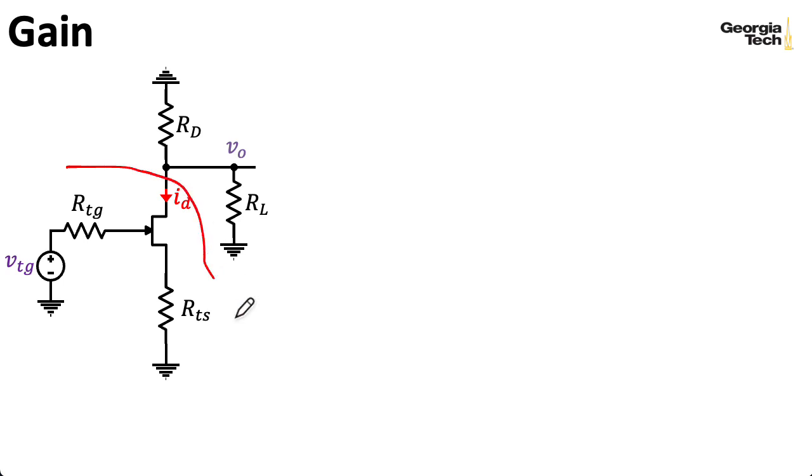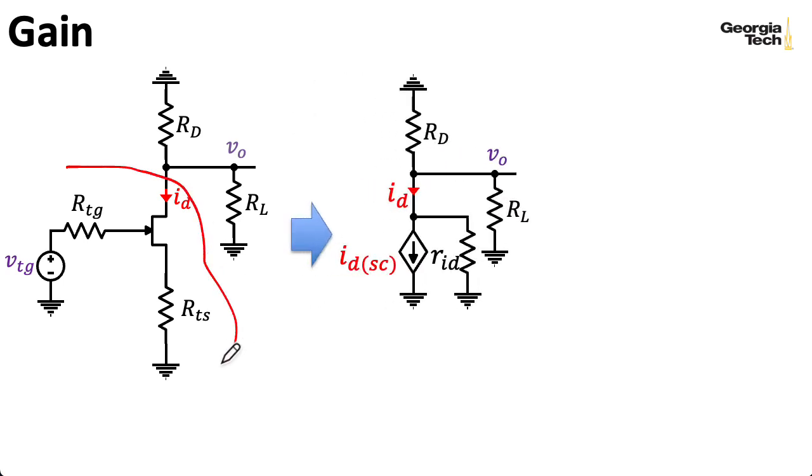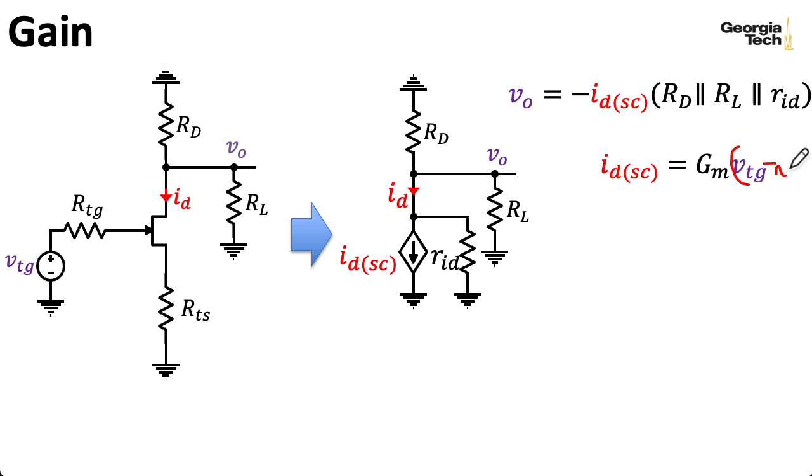So now I can take all this stuff down here and replace it with the Norton equivalent circuit. I can then compute this output voltage by taking my current source here, this IDSC, and multiplying it by these three resistances in parallel according to Ohm's law. I know I need to have a minus sign here, because this arrow is pulling current out of the node. The drain current is going to be big GM times VTG minus VTS, but here VTS is zero, so I just have that VTG.